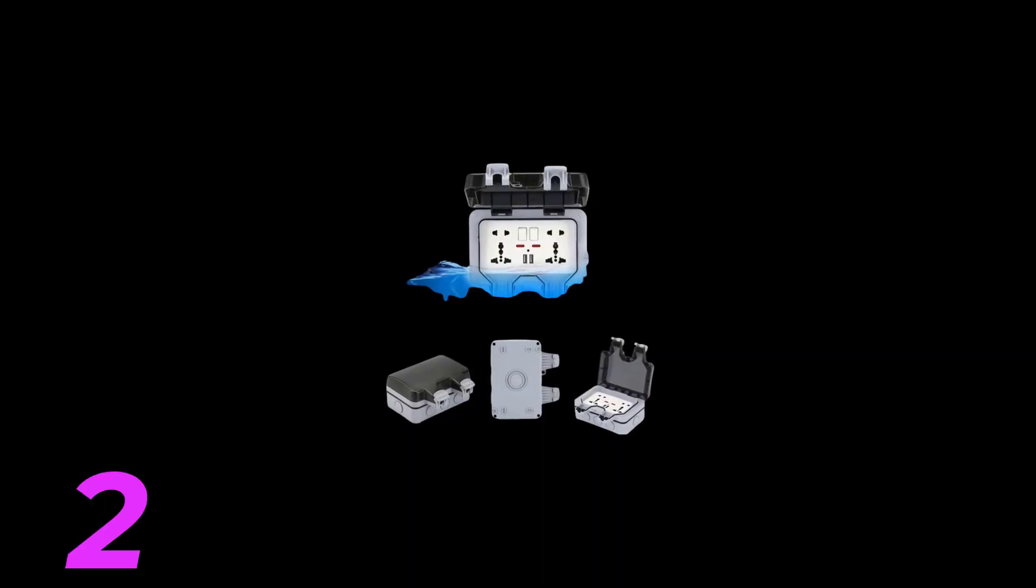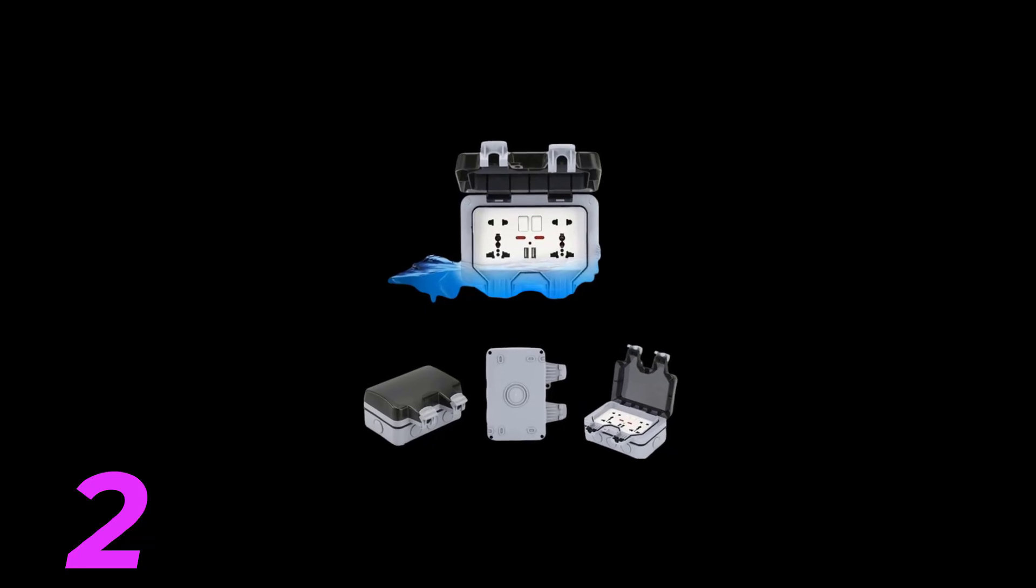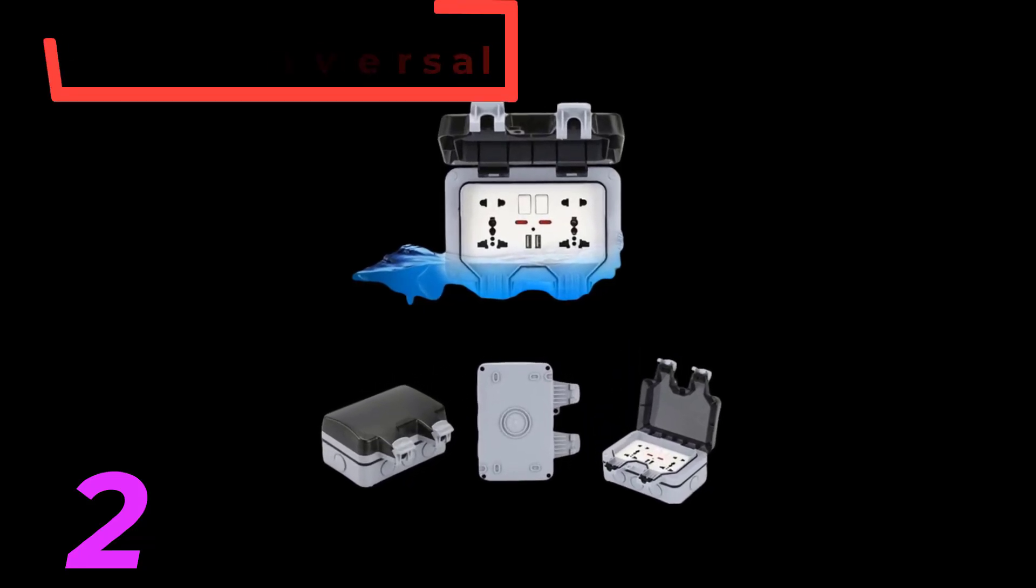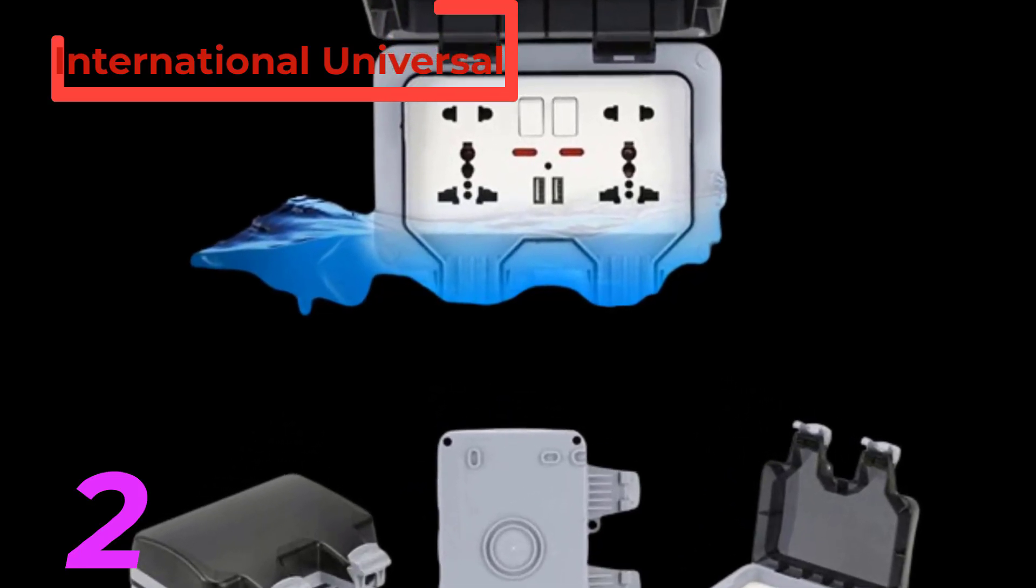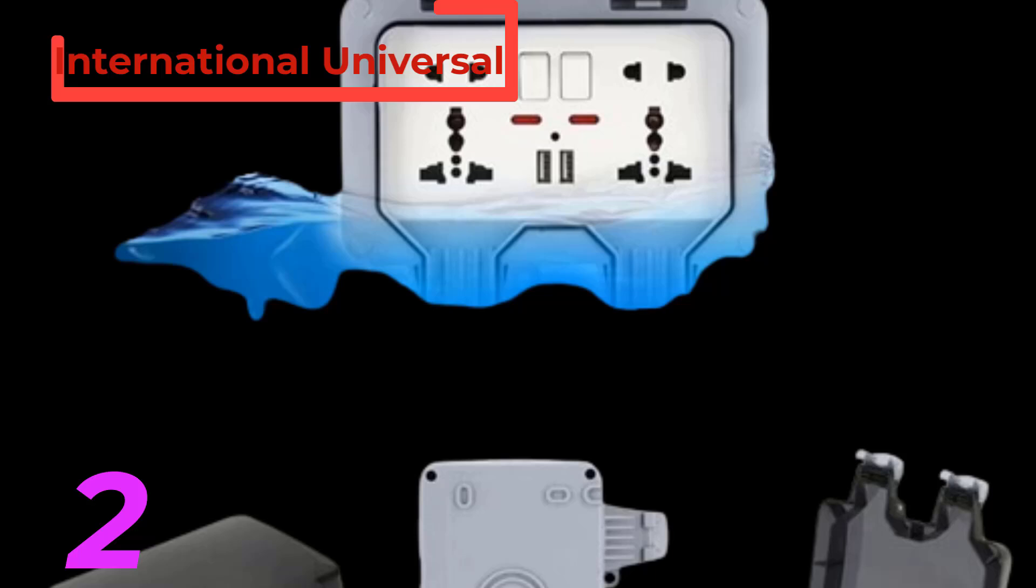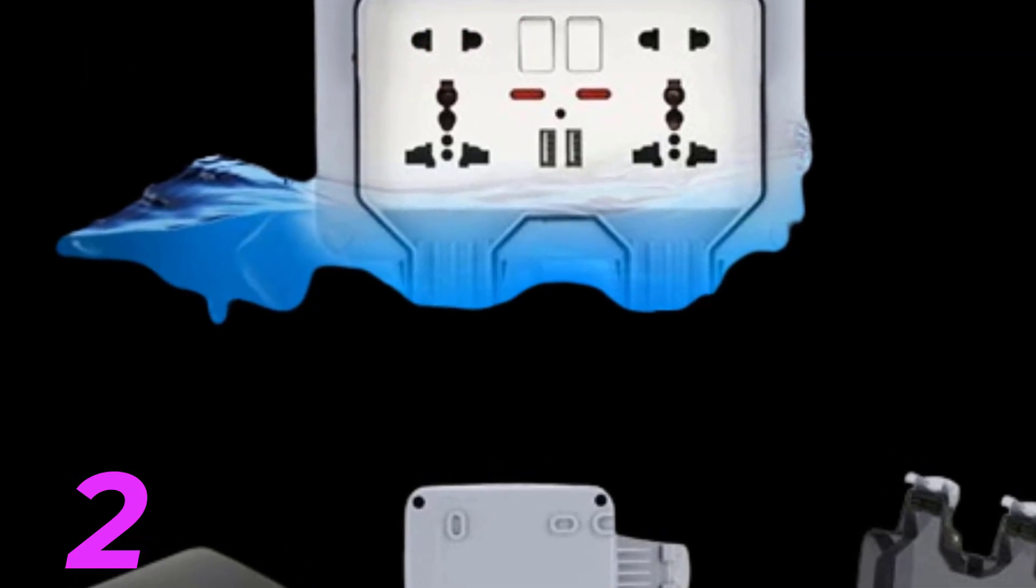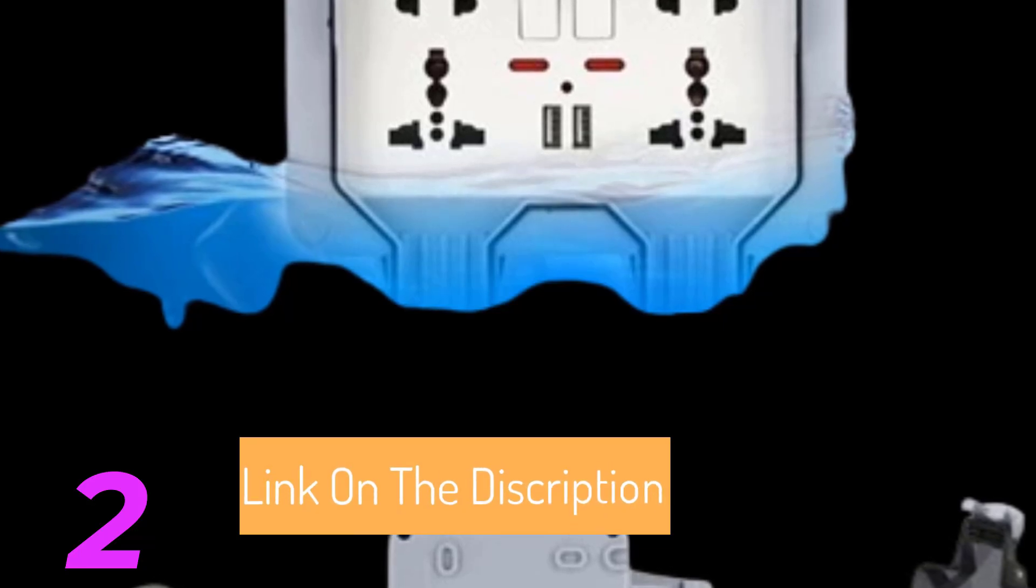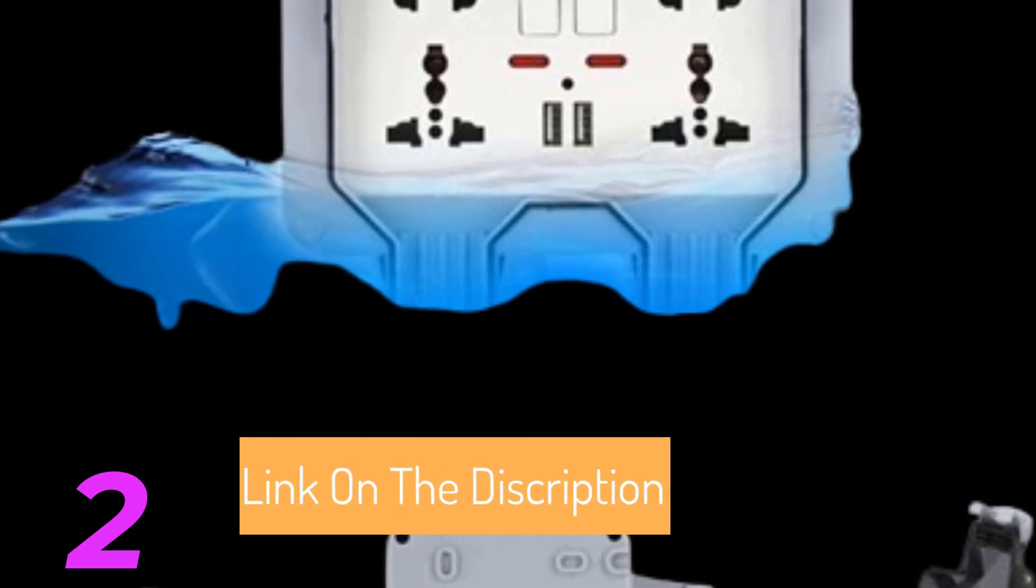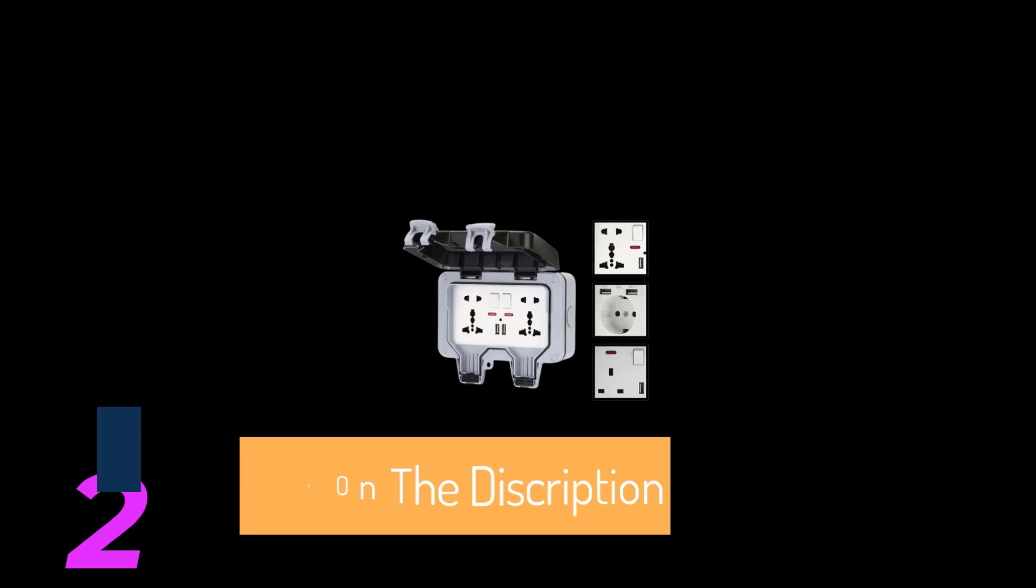International Universal IP66 USB Wall Outdoor Waterproof Switch Socket, UK/EU/DE/Korea Rainproof Charging Outlet Waterproof Box. Material: plastic. Backlight indication: no. Socket type: 220V. Installation type: wall mounted. Is smart device: no. Features: with USB ports.